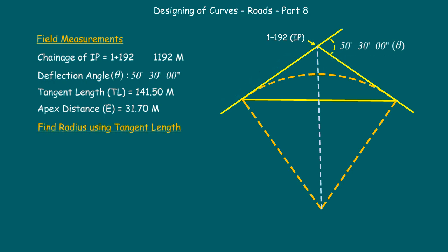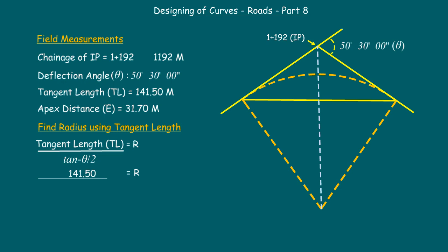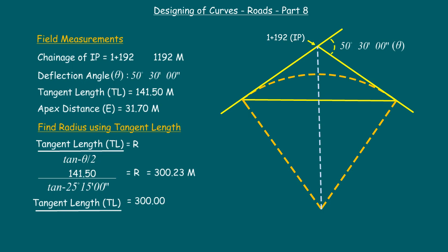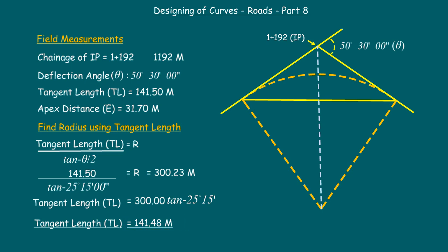Now let us calculate the radius using the tangent length. The formula is: tangent length equals radius into tan(theta/2), so radius equals tangent length divided by tan(theta/2). Accordingly, the radius equals 141.50 divided by tan(25 degrees 15 minutes), which gives 300.023 meters. Let us assume the radius as 300 meters for easy calculation. Recalculating the accurate tangent length: 300 into tan(25 degrees 15 minutes) gives 141.48 meters. So the final tangent length is 141.48 meters.